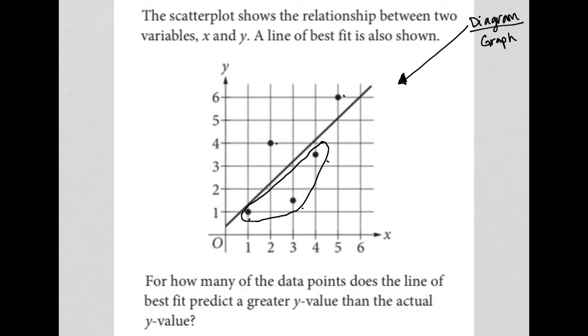Why? Because, for instance, this point right here, the Y value for that point is about three and a half. But the Y value predicted by the line of best fit for when X is four is up here a little bit over one. Right. So that means at this point has a Y, or I should say that the line of best fit predicts a greater Y value than the actual Y value.